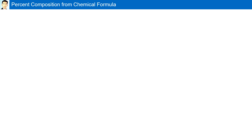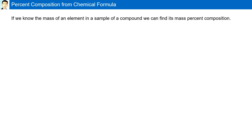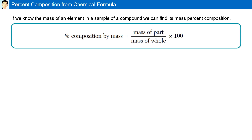Percent Composition from Chemical Formula. If we know the mass of an element in a sample of a compound, we can find its mass percent composition. This can be found by using this formula, which is also available in Reference Table T of the New York State Chemistry Regents, where the percent composition by mass is equal to the mass of the part divided by the mass of the whole, multiplied by 100.